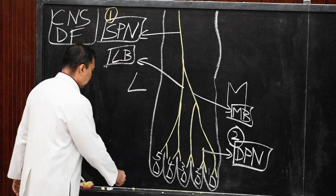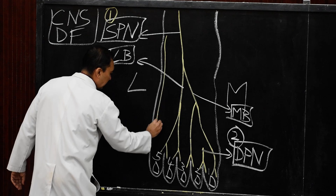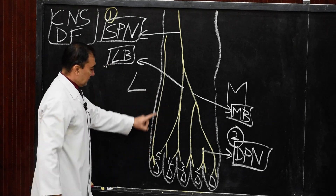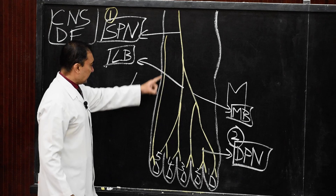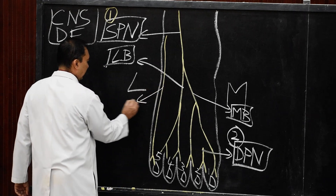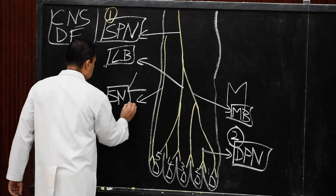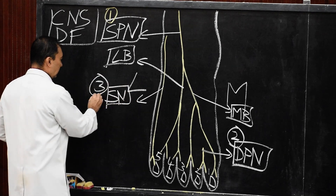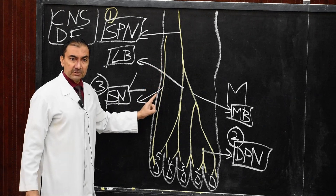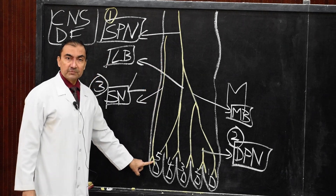The third nerve is the one that supplies the lateral margin of the dorsum till the fifth toe. This entire territory will be marked as that of the sural nerve — the third cutaneous nerve, which supplies the lateral margin of the dorsum along with that of the fifth digit.